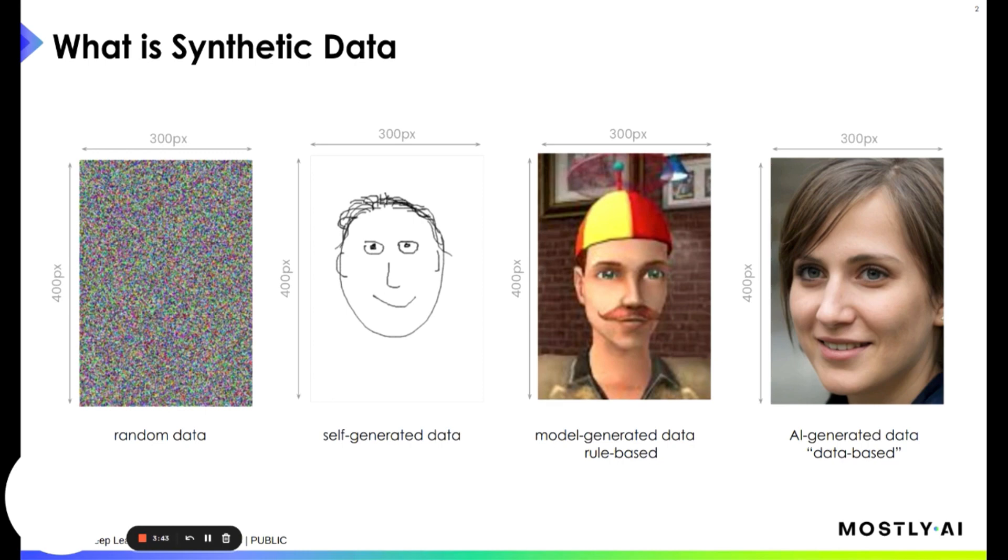However, if you want to have smarter data, imagine you want to have some synthetic faces - then you need to amp up your game. What you can do is create your data on your own, draw the faces manually. You can have self-generated synthetic data. The quality is already heavily improved, however it's still not really smart. Still, self-generated data has its place. Think of software testing where edge cases could be covered like this - you create your own edge cases that you want to test.